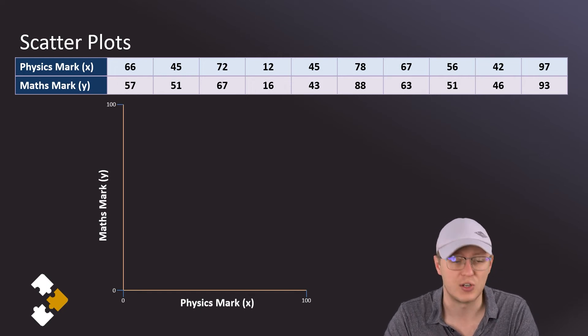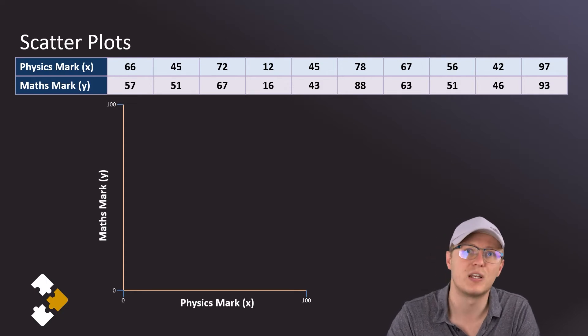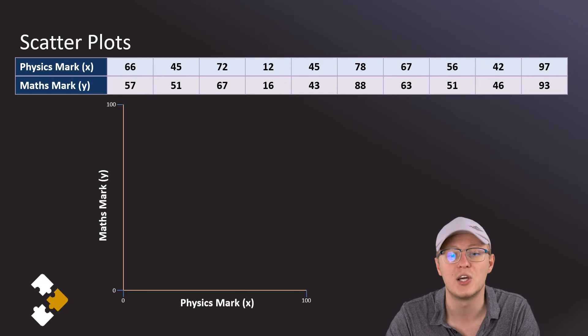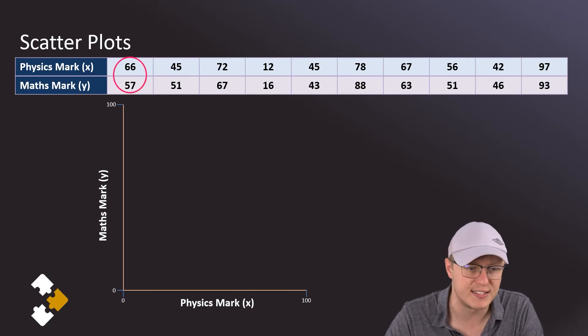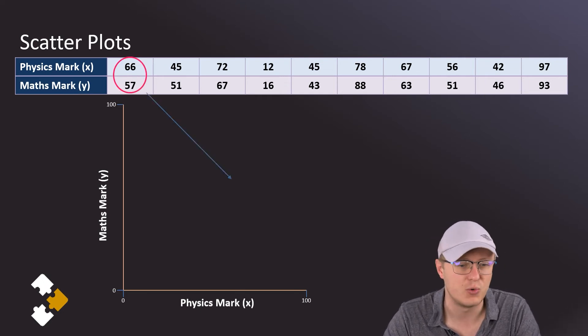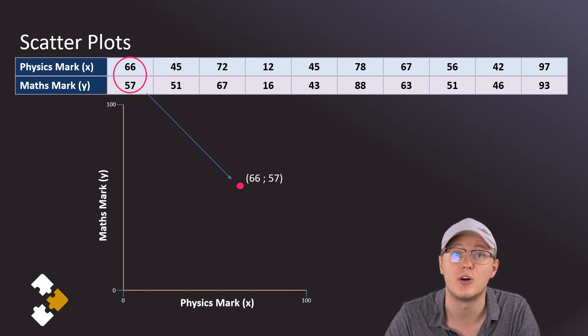In order to construct our scatter plot, we're going to take each of these ordered pairs and plot them like we would usually plot a point on the Cartesian plane. So if we take that 66 and 57, we're going to plot an x value of 66 and a y value of 57.